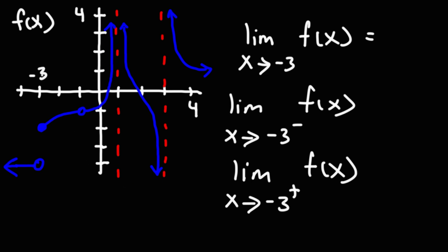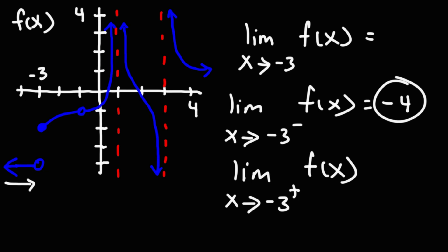So at this point we have a negative 3 value for x. As we approach it, following the curve from the left side, notice that this has a y value of negative 4. So as x approaches negative 3 from the left, this gives us a y value of negative 4, and that's the answer for this one-sided limit.